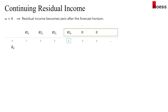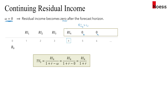Now let's look at the individual case where the persistence factor equals zero. The residual income becomes zero after the forecast horizon from year four onwards. Since RI4 times omega equals zero, the terminal value in period three is simply RI4 divided by (1 + r), moving that value back one step.